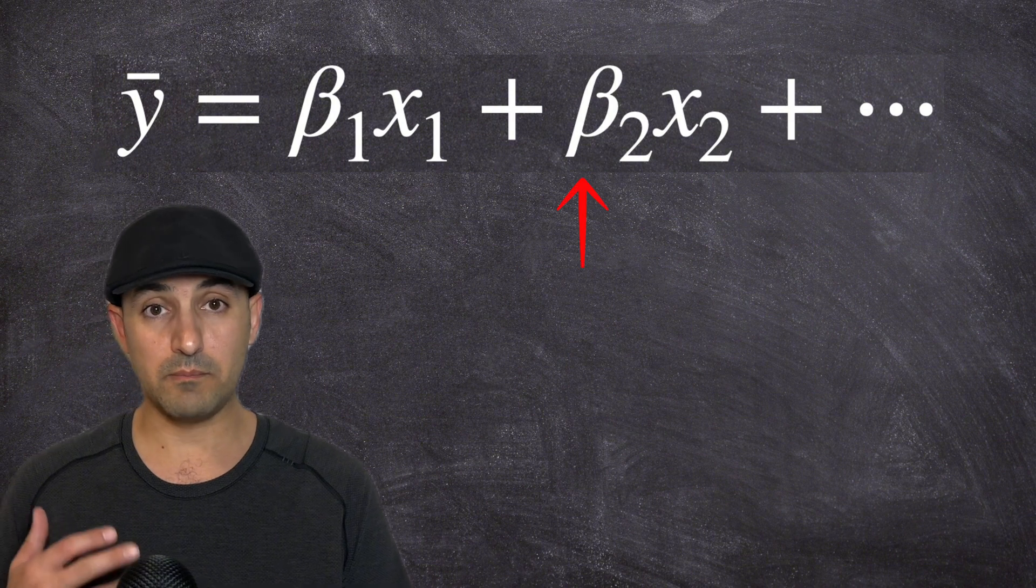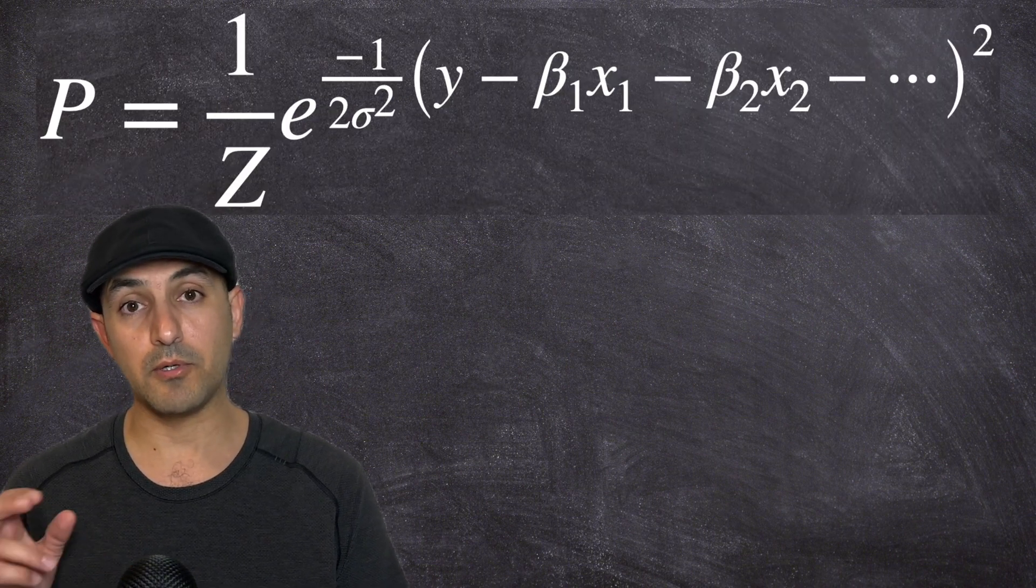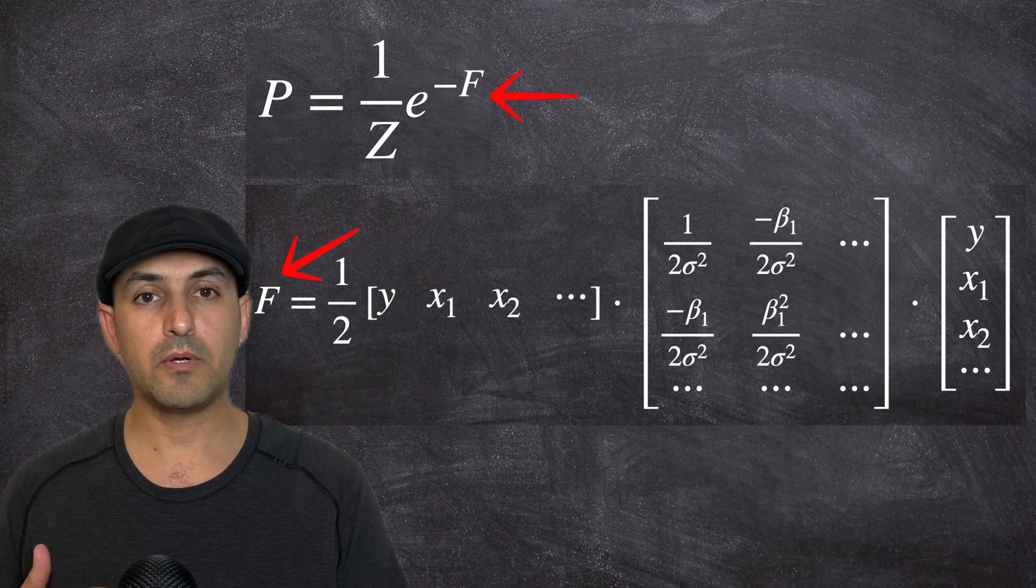Let's now estimate the beta parameters. First, expand the parentheses in the probability function. This time, rearrange them into a matrix form. Now, assuming that the X values are also not set, similar to the Y variable, this is a multivariate Gaussian distribution.